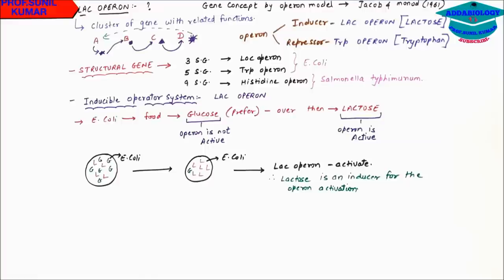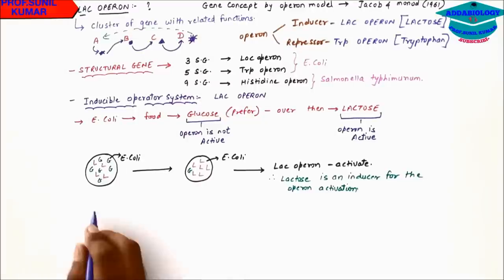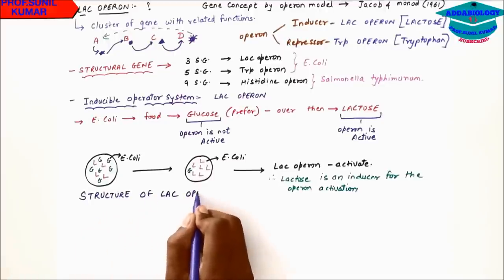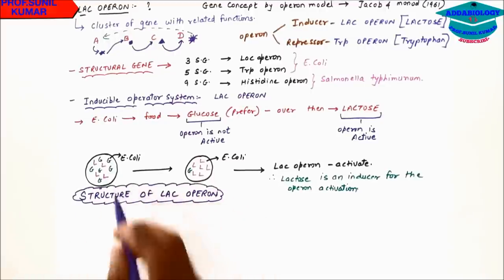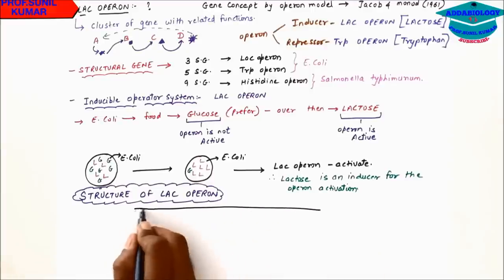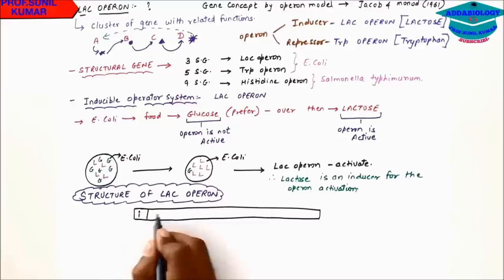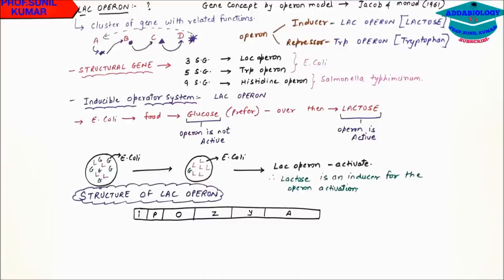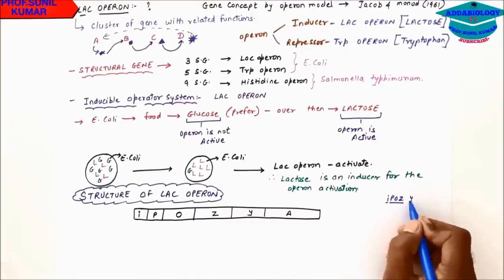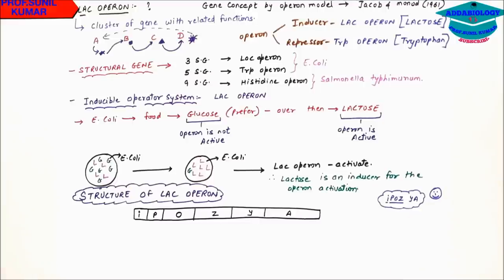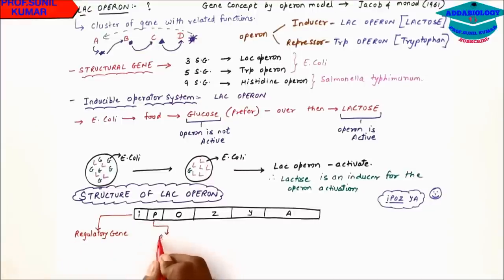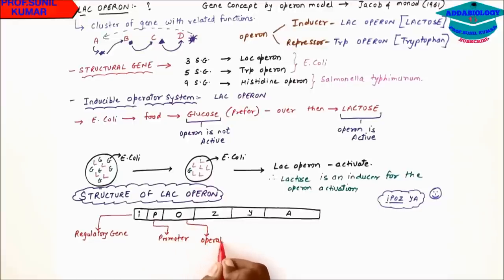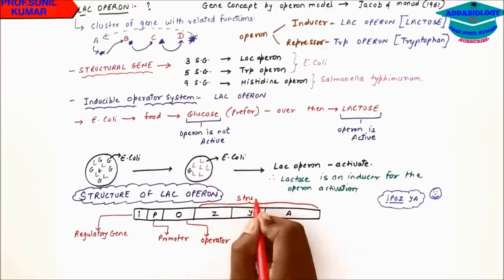Now let's talk about the structure of lac operon. To remember the diagram, draw two horizontal parallel lines and then remember the gene sequence: I, P, O, Z, Y, A. A short mnemonic to remember this is 'I pose yeah' — as in 'I pose for a photo, I pose yeah.' This helps remember the gene order in lac operon.